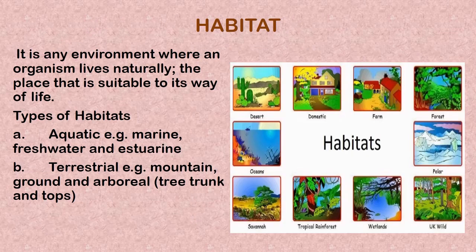Moving on, we'll look at the concept of habitat. A habitat is any environment where an organism lives naturally — the place that is suitable to its way of life. We basically have two types of habitats. The first is the aquatic or water habitat; examples are the marine, freshwater, and estuarine habitats. The second is the terrestrial or land habitat; examples include mountains, the ground, arboreal habitats, the rainforest, and so on.